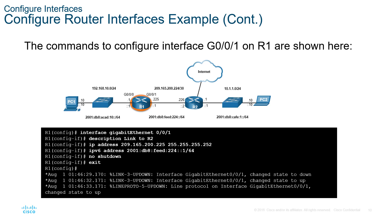If we wanted to configure the gigabit 0/0/1 interface, we could do that as well. That is the link between R1 and R2, hence the description. We give it an IP address, we give it an IPv6 address, and we also issue no shutdown to turn it on.